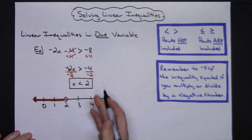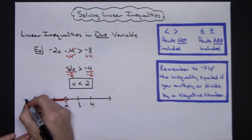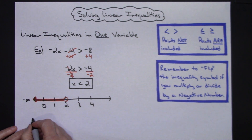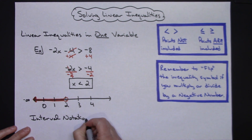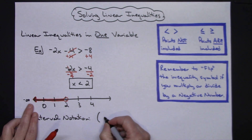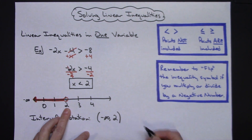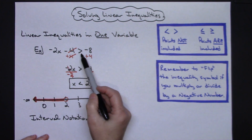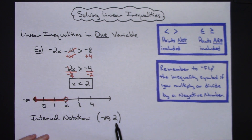If you also need to write this in interval notation, picture the number line: negative infinity is to the far left, so the answer is written as a curvy bracket, negative infinity, all the way up to 2, with a curvy bracket at 2 since it's not included. If it had been greater than or equal to, the two would be included, shown as a filled dot and a square bracket.